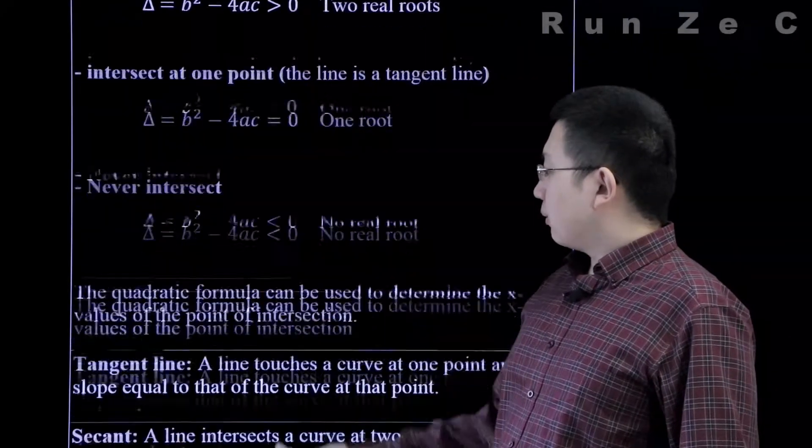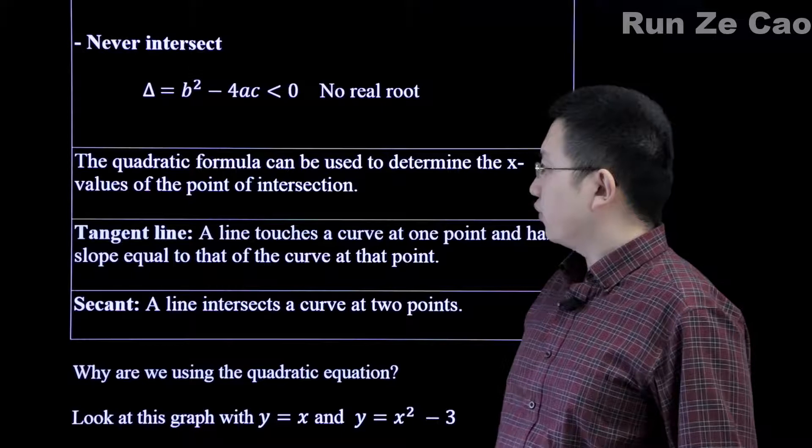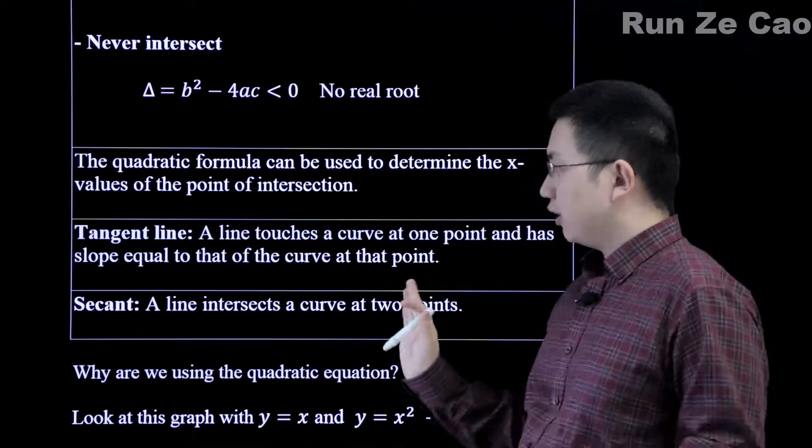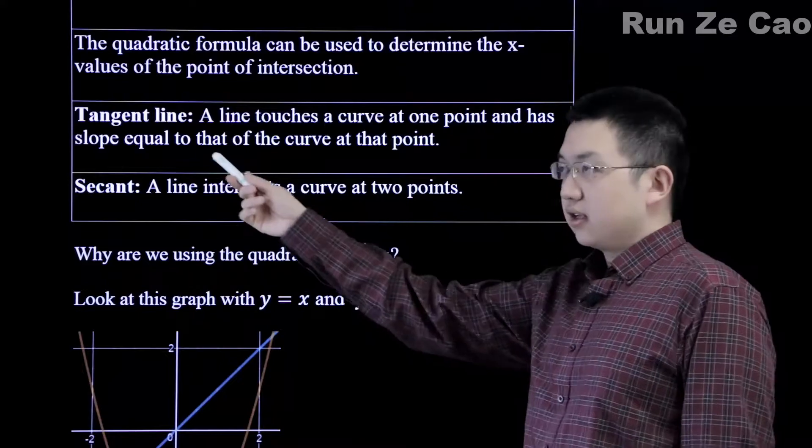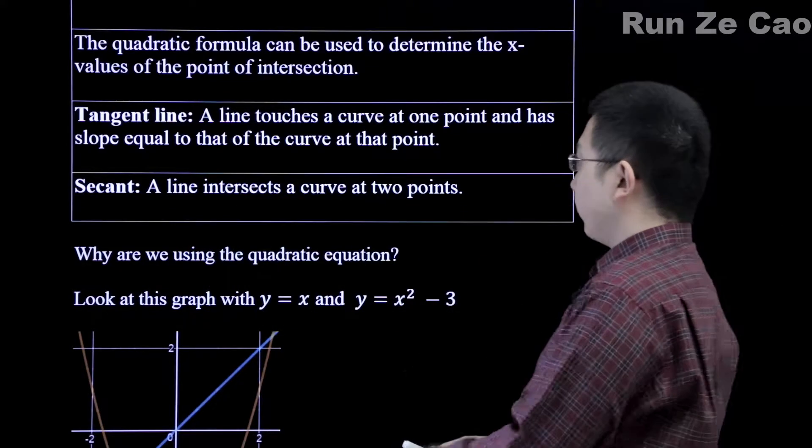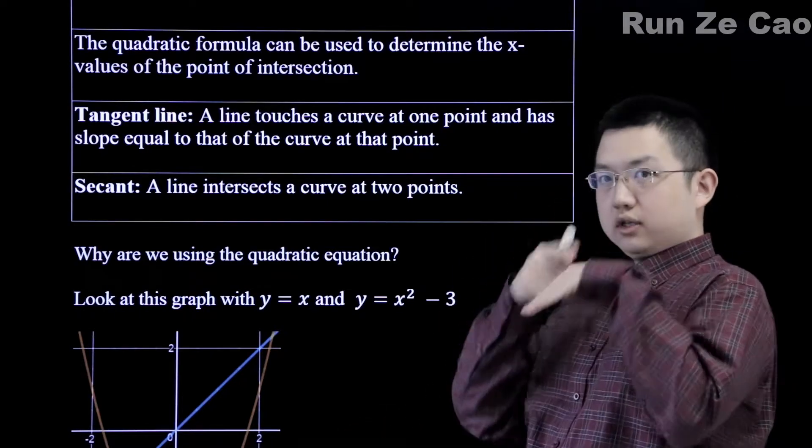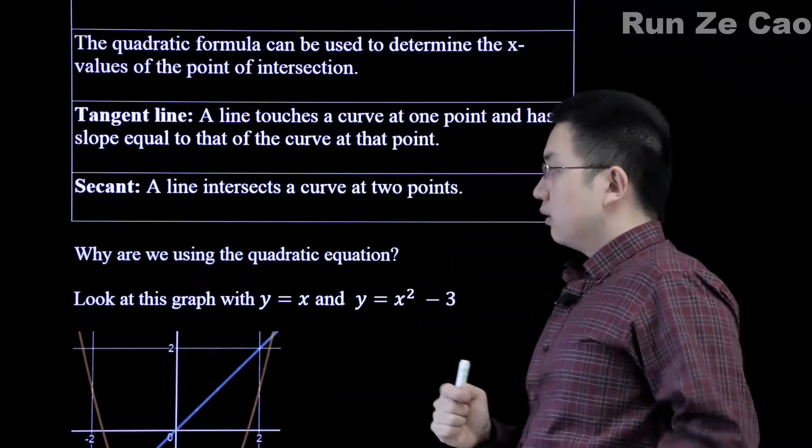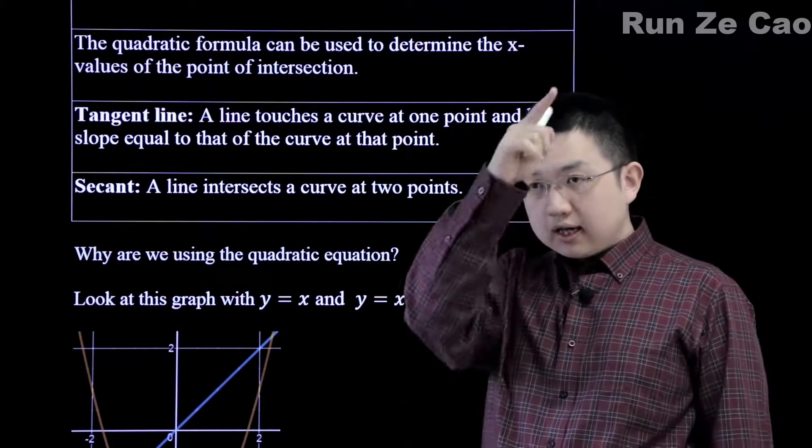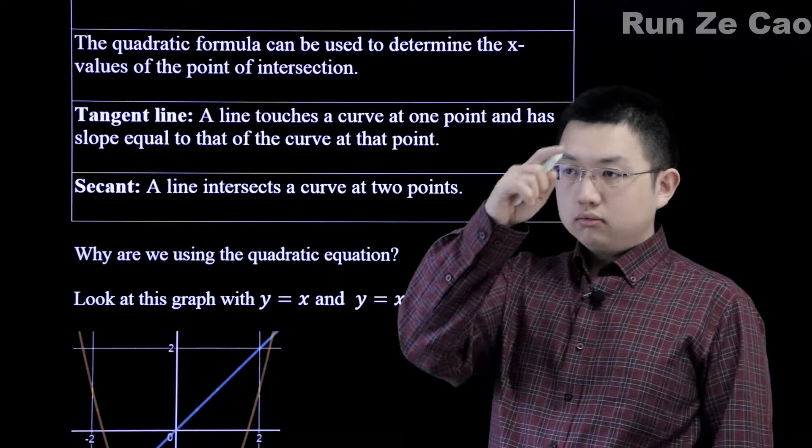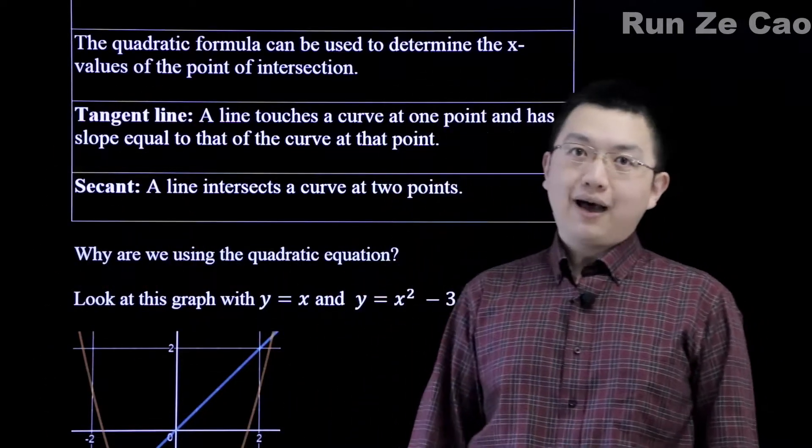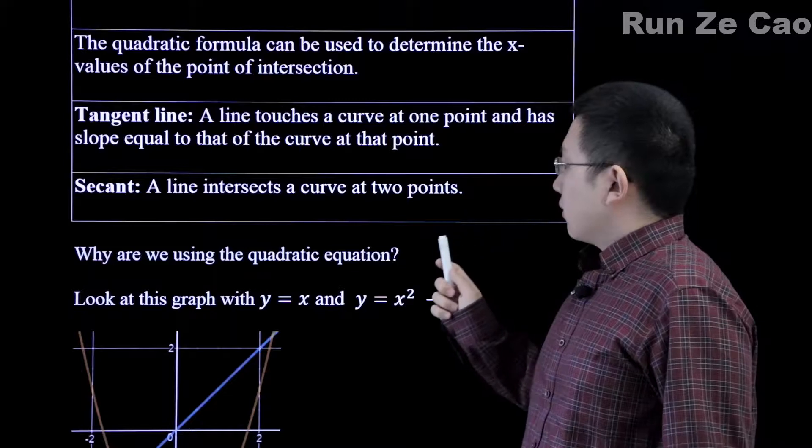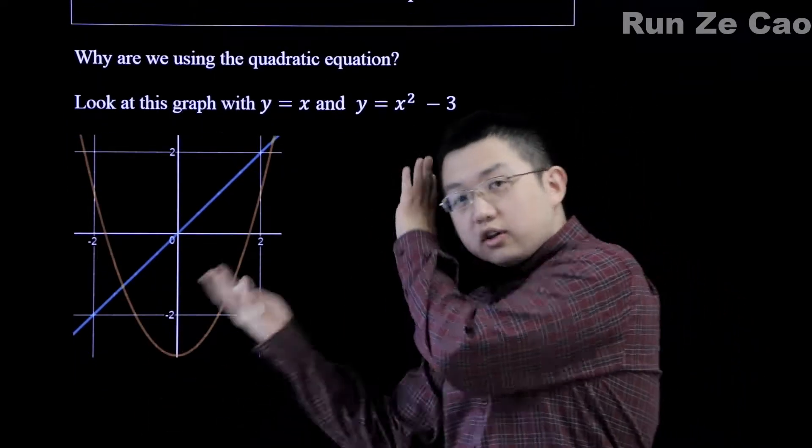So why are we using the discriminant here? Why is it that we can use a quadratic formula? We can use it to find the value of the point of intersection. We can use it to find whether or not this is a tangent line, so touches a curve at one point and has slope that is equal to the slope of that curve at that point, or a secant so intersects a curve at two points. That doesn't necessarily mean a parabola - it could be a different form of curve or even a circle, or any other shape really.